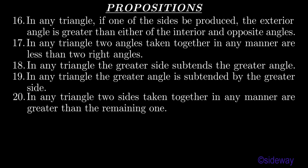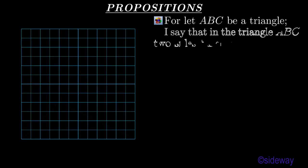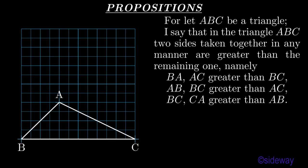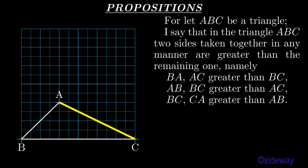Proposition 20. In any triangle, two sides taken together in any manner are greater than the remaining one. Let ABC be a triangle. I say that in the triangle ABC, two sides taken together in any manner are greater than the remaining one, namely: BA, AC greater than BC; AB, BC greater than AC; BC, CA greater than AB.